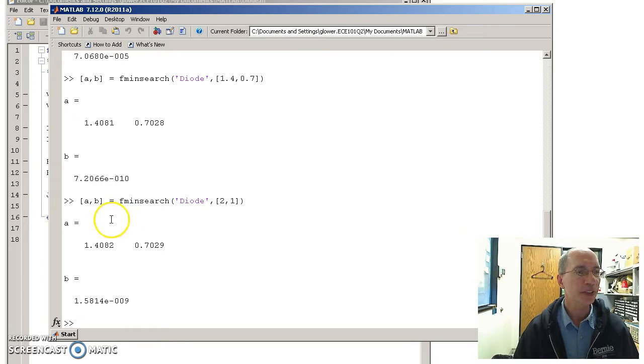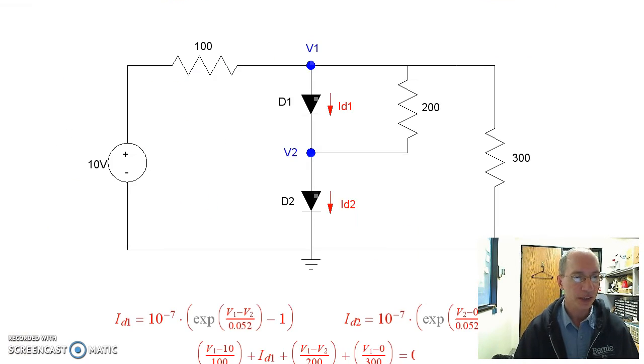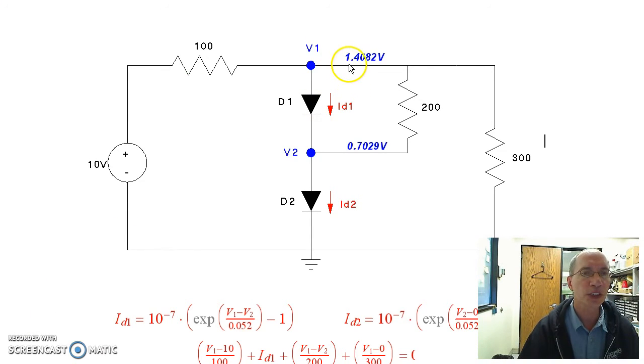That's kind of an example of how to use fminsearch. It's very useful any time I can set up n equations and unknowns. Instead of making the equations equal to 0, make them equal to an error. And make the cost of sum squared error. It'll do the best it can to find what guesses will make the error equal to 0, or what guess will solve those two equations. So it looks like on this circuit, the resulting voltages are 1.4082 and 0.7029 volts.